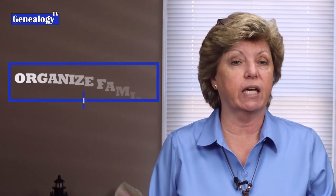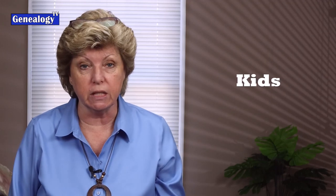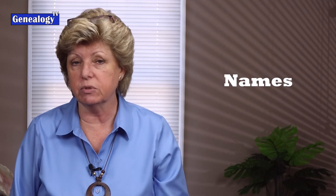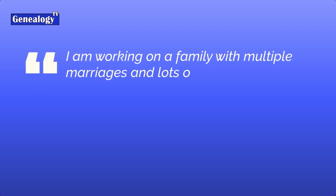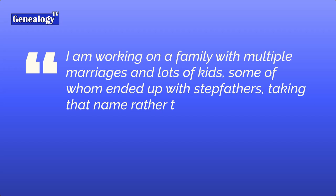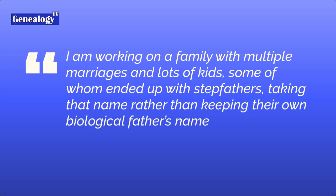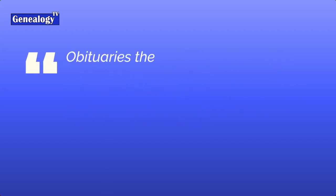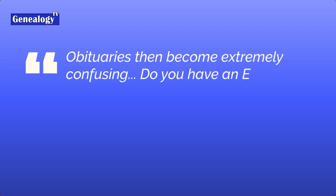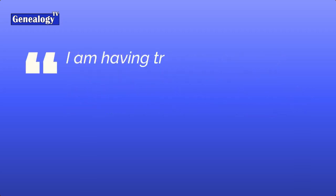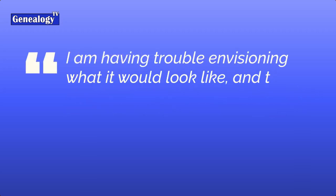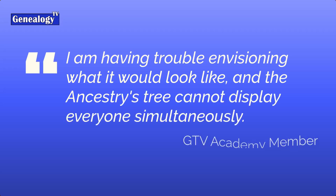A Genealogy TV Academy member had a question about how to organize multiple spouses with multiple kids with multiple names. He said he's working on a family with multiple marriages and lots of kids, some of whom ended up with their stepfather's name instead of keeping their biological father's name. Obituaries became extremely confusing. He asked if there was an Excel template to display all the names across several marriages, saying Ancestry's tree does not display everyone simultaneously.